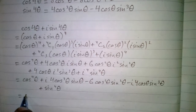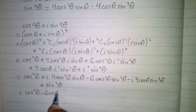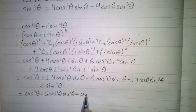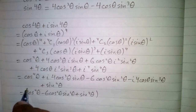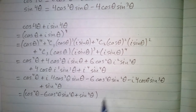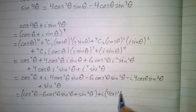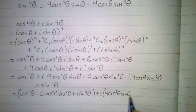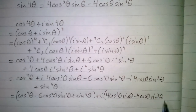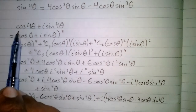Now we can rearrange this expression. We have cos⁴θ minus 6cos²θ·sin²θ plus sin⁴θ, and we can take iota common from the remaining two terms, giving plus iota times (4cos³θ·sinθ minus 4cosθ·sin³θ).